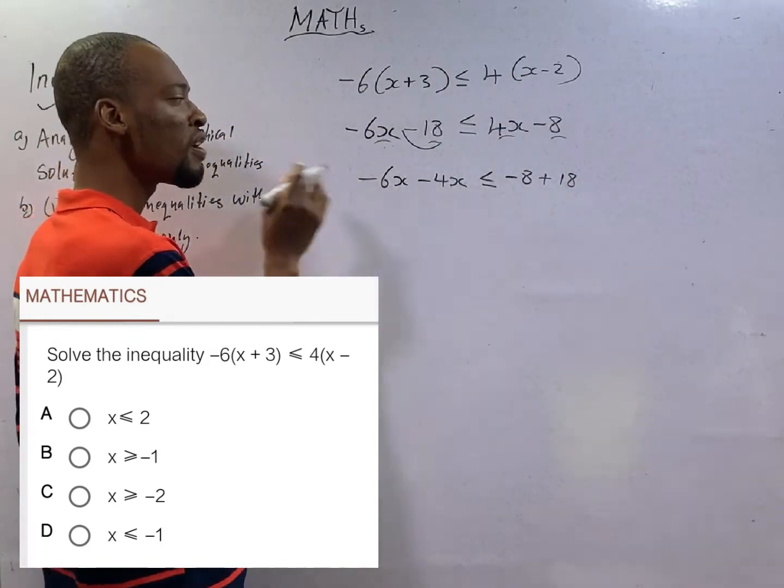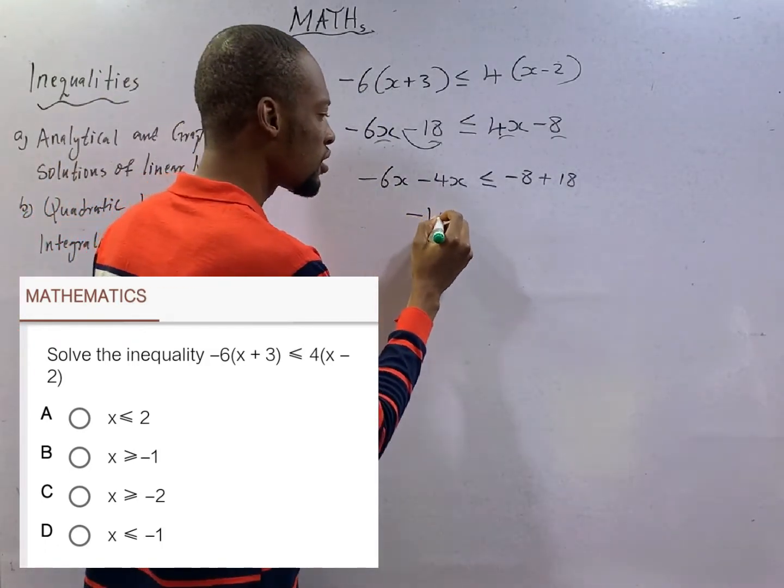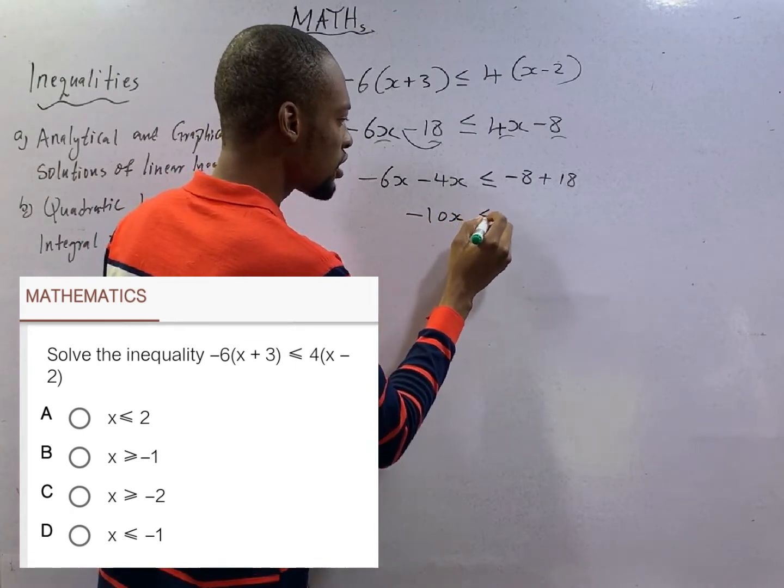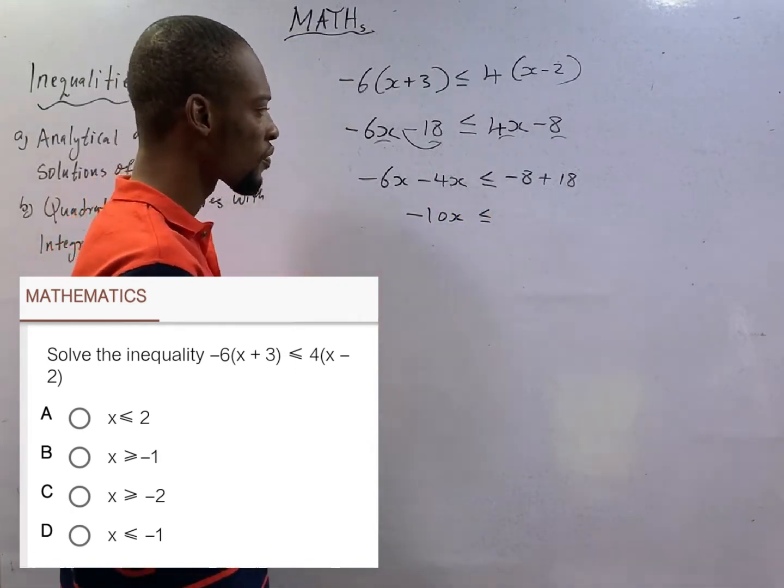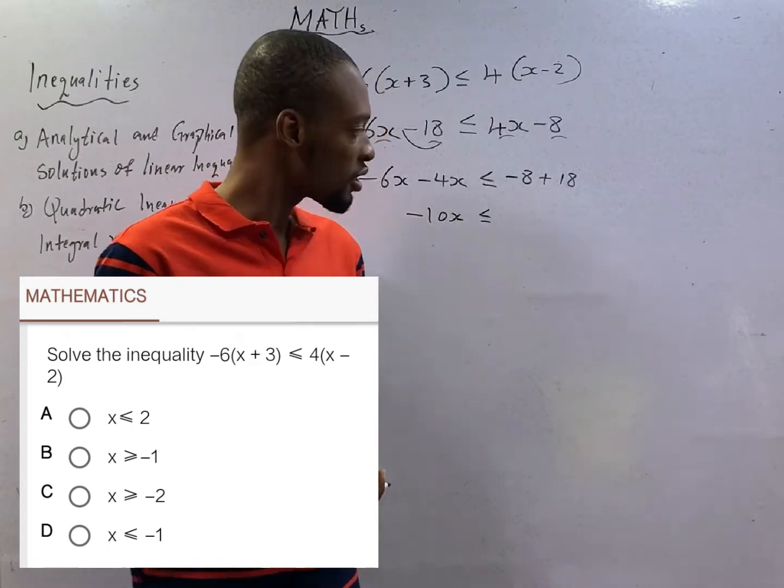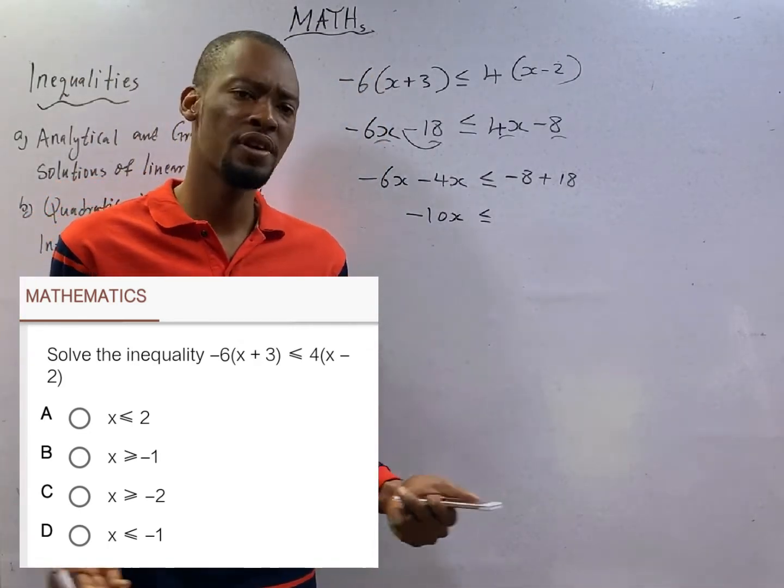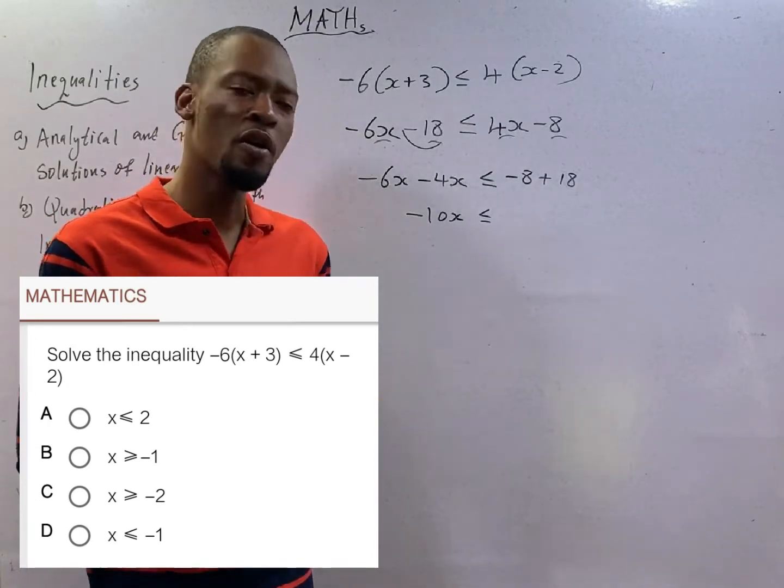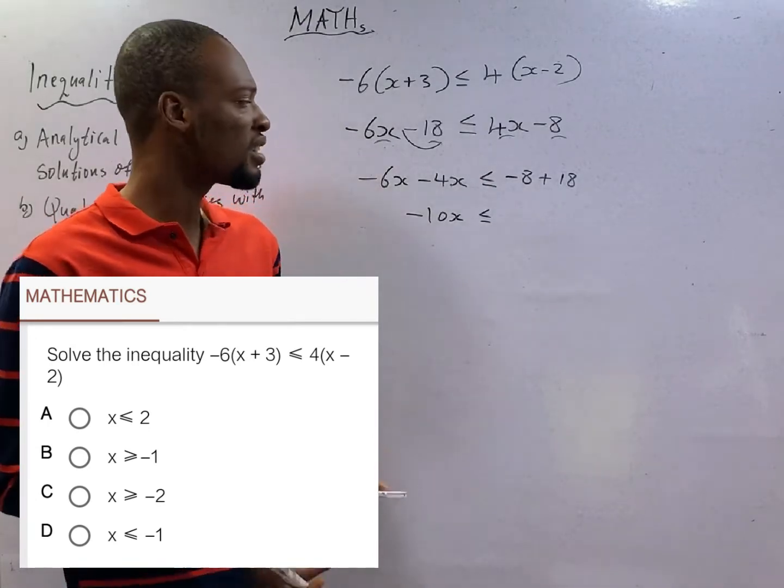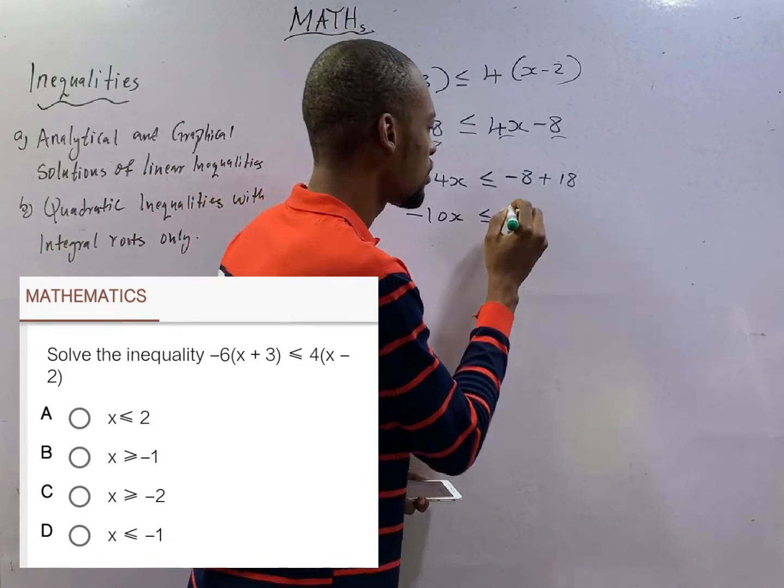-6x minus 4x is -10x. This is less than or equal. -18 plus 8. You are owing 8, you have 18. You are a big boy. You pay the 8 you are owing, you are still left with 10. So that is positive. So this is 10.